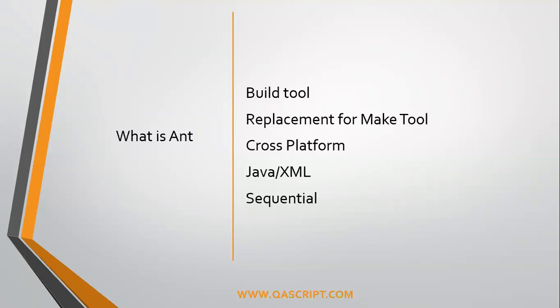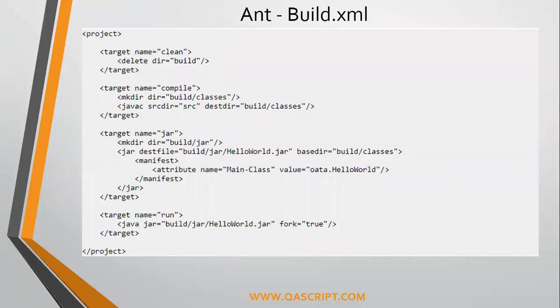Ant has a build.xml file where you can mention all your configuration. One of the disadvantages of Ant is that it's quite sequential. When you look at a sample build.xml file, you will see that everything is in sequence, and the way you build your project, you have to mention all the steps in sequence. There is a lot of detail you need to provide in the build.xml file, like the target name and the directory.